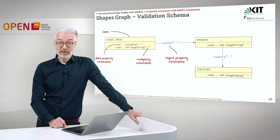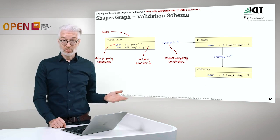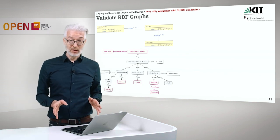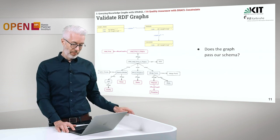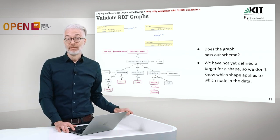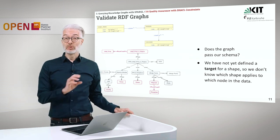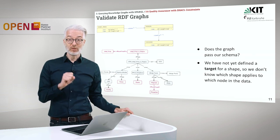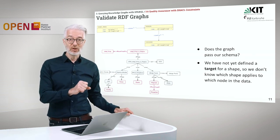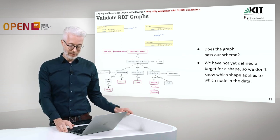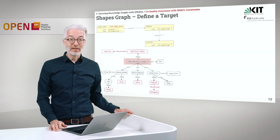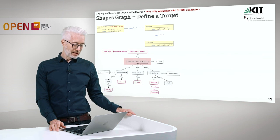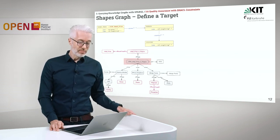These are shape expressions in the form of a graph — a shape graph which is rather easy to read. Now let's try to validate our graph against this shape graph. Does the graph pass our schema? We do not know exactly where to start, so we have to define a target for a shape, so that we know which shape applies to which node in the data. We define here a target for the Nobel Prize shape: this is of type Nobel Prize, which connects everything of that type to exactly that shape to be checked.